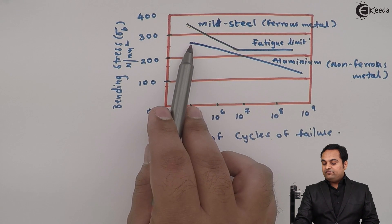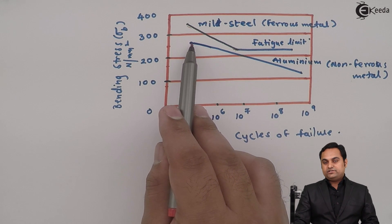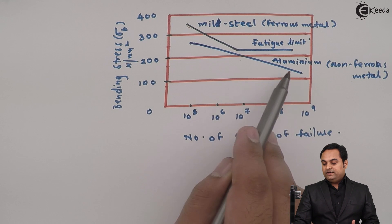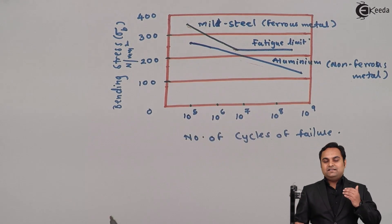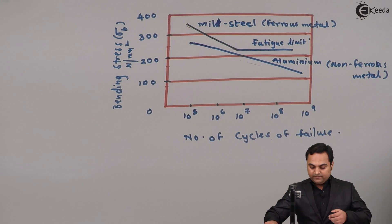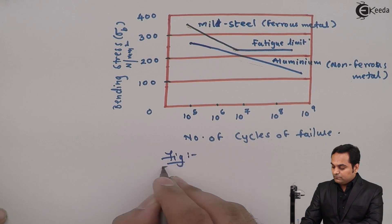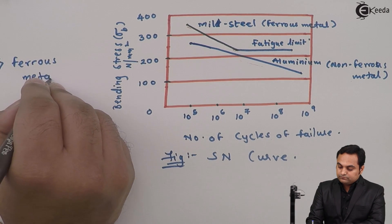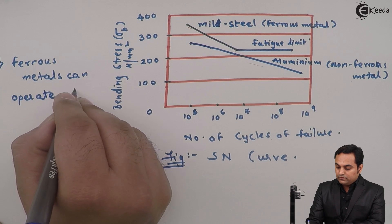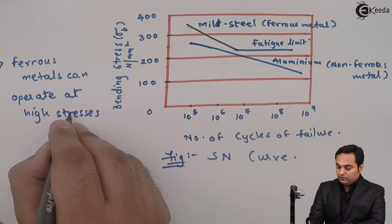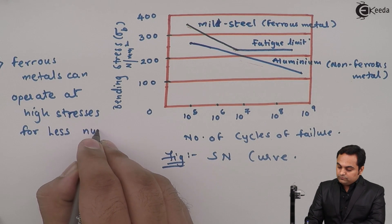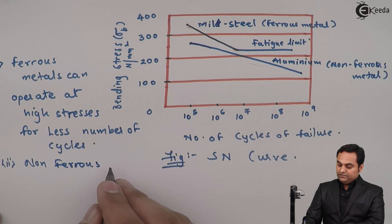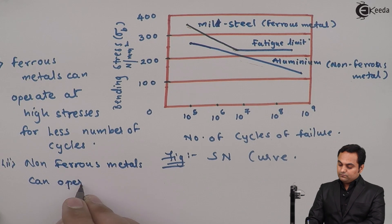For non-ferrous metals, if we go on decreasing the stress while increasing the number of cycles, these non-ferrous metals can operate at less stress for more number of cycles. From this figure, I can say that ferrous metals can operate at high stresses for fewer number of cycles, whereas non-ferrous metals can operate at less stress for more number of cycles.